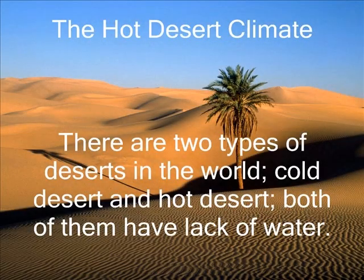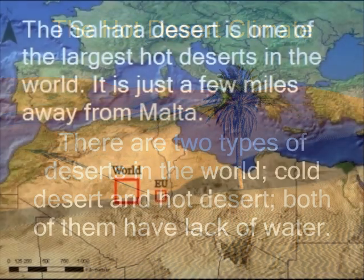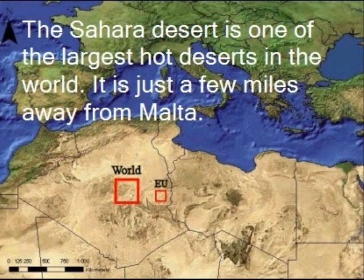The hot desert climate. There are two types of deserts in the world: cold desert and hot desert. Both of them have a lack of water. The Sahara Desert is one of the largest hot deserts in the world. It is just a few miles away from Malta.